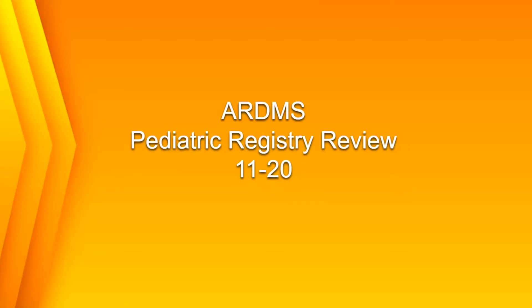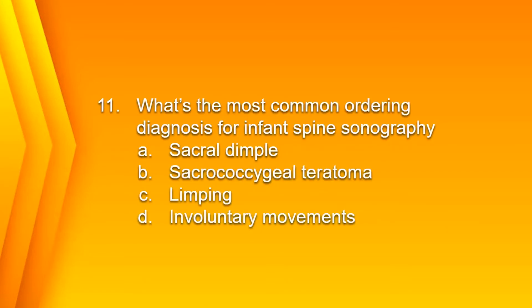Now here goes questions 11 through 20. Number 11: What is the most common ordering diagnosis for infant spine sonography? A. Sacral dimple, B. Sacral coccygeal teratoma, C. Limping, or D. Involuntary movements. The answer is A.